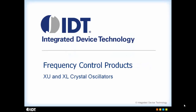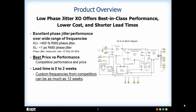IDT is introducing two new lines of crystal oscillators, the XU and XL family of XOs. The XU and XL offer low phase jitter, low cost, and quick delivery, with the XU having a max phase jitter over 12 kHz to 20 MHz of 400 femtoseconds, and the XL having a max phase jitter of 1 picosecond.